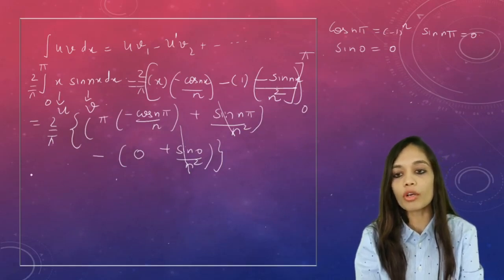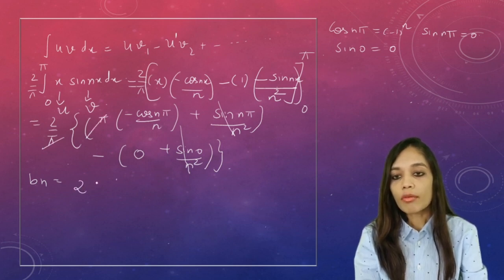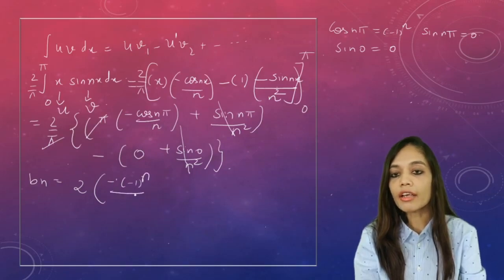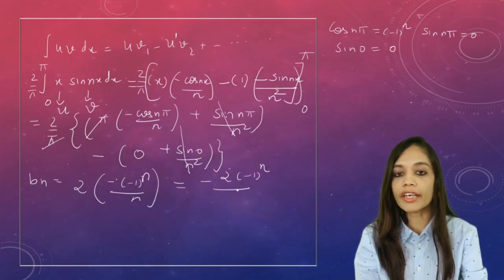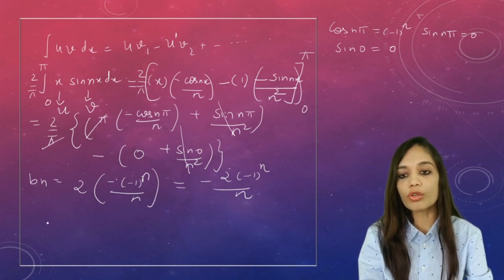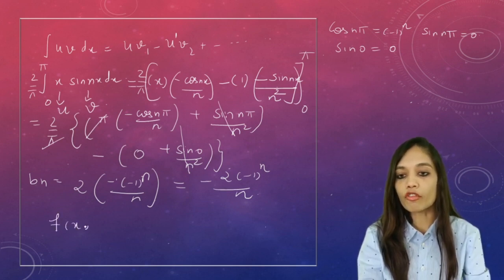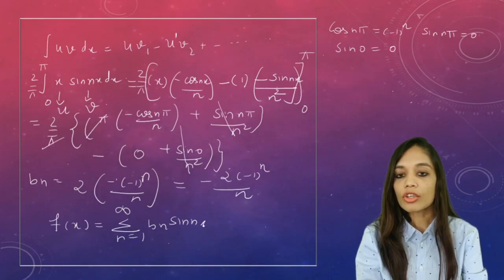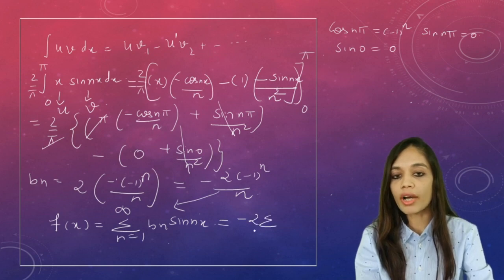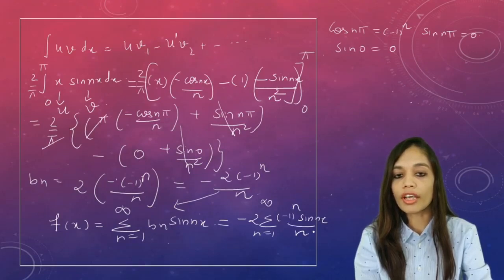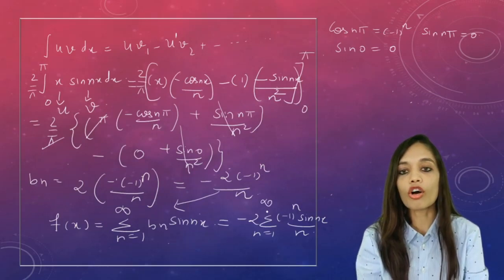After substituting these values, bₙ = (2/π)·π·(−(−1)ⁿ/n) = −2(−1)ⁿ/n. Substituting into the Fourier series f(x) = Σ(n=1 to ∞) bₙ sin(nx), the final answer is: f(x) = −2 Σ(n=1 to ∞) [(−1)ⁿ/n] sin(nx).